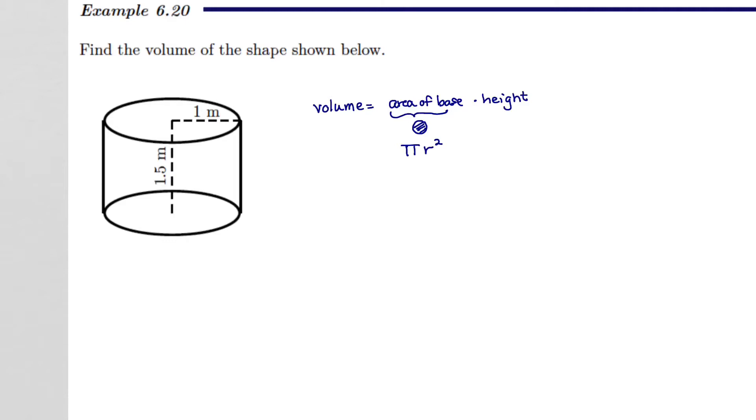And after we get the area of the base, or the area of the circle, then we're going to multiply by the height. That, together, is going to give me the total volume for this cylinder. So let's get to work.